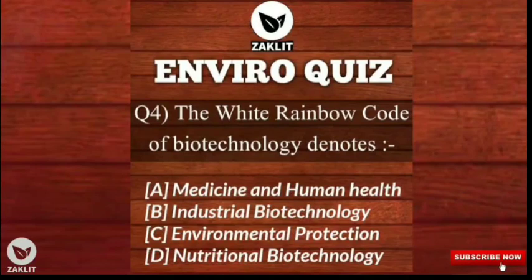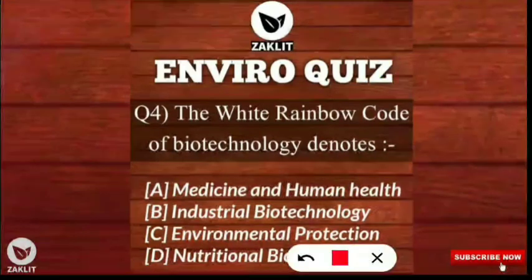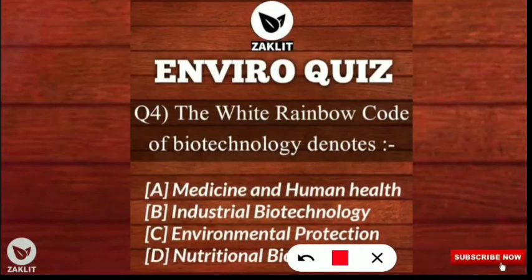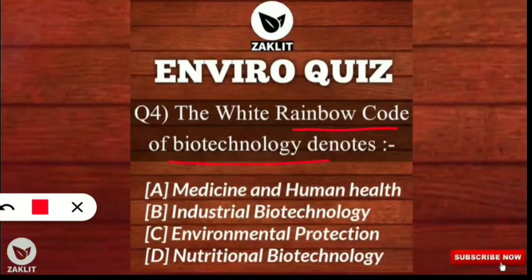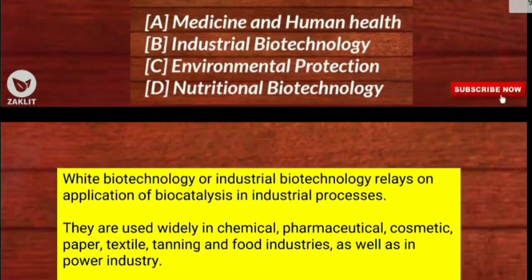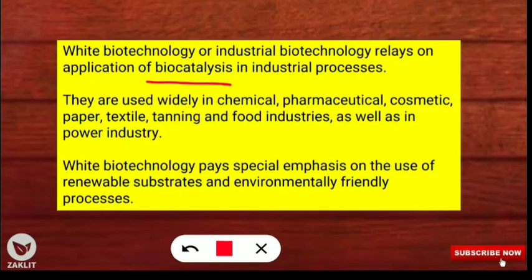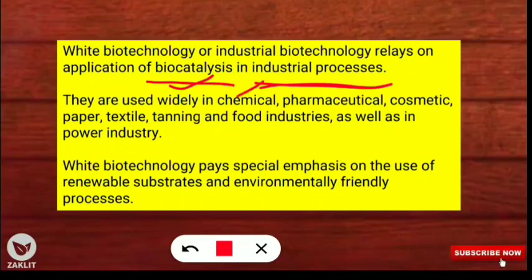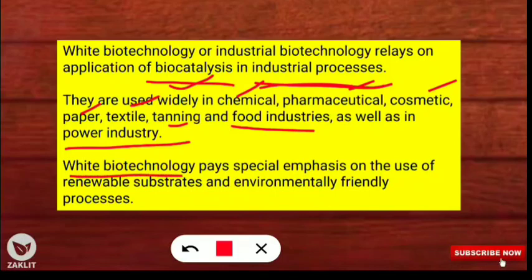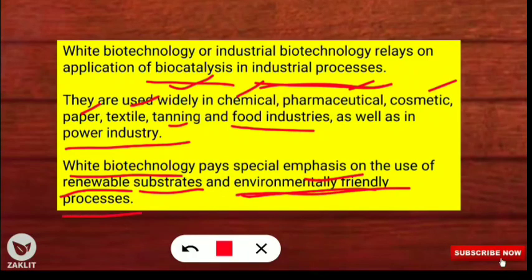Question four was: what does the white rainbow code of biotechnology denote? The correct option is industrial biotechnology. White biotechnology, or industrial biotechnology, relies on the application of biocatalysis in industrial processes. It is used widely in chemical, pharmaceutical, cosmetic, paper, textile, tanning, food, and power industries. White biotechnology places special emphasis on the use of renewable substrates and environmentally friendly processes.